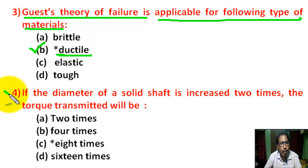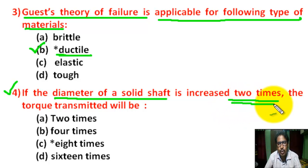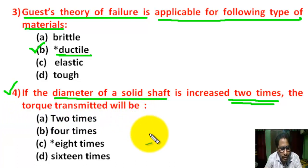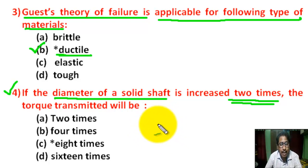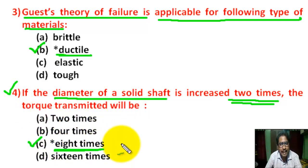Question number 4: if the diameter of a solid shaft is increased 2 times, the torque transmitting capacity will be — considering the torsion equation T/Ip = Fs/R. There are 4 options. The correct answer is C: 8 times. The torque transmitting capacity will be 8 times.